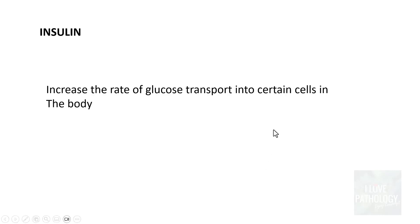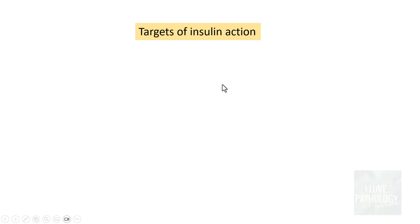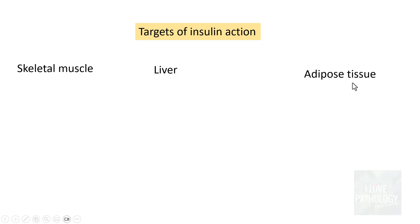Once we understand insulin secretion, let us see how secreted insulin acts. Insulin is the hormone that increases the rate of glucose transport into certain cells, providing a major source of energy. The intermediaries produced during glucose metabolism are used in biosynthesis of various cellular building blocks. There are three important targets of insulin action: skeletal muscle, liver, and adipose tissue.